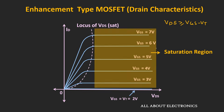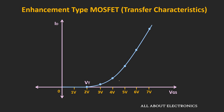Now let's look at the transfer characteristic, which shows the relationship between the input voltage Vgs and the output drain current Id — how Id changes as we change Vgs, with Vds kept constant. Up to the threshold voltage, the drain current Id is zero. After that, as we increase Vgs, Id increases. The relationship is given as Id = K(Vgs − Vt)², where K is the device constant depending on the physical parameters of the device. Using this expression we can find the drain current for any fixed value of Vgs.